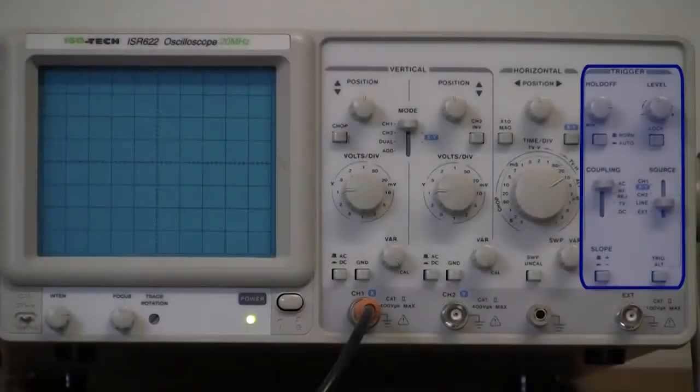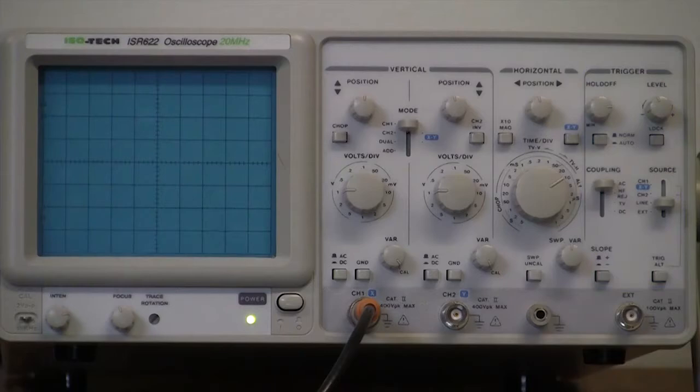The group of trigger controls on the right of the oscilloscope is used to ensure that the input signal is displayed correctly on the oscilloscope screen.